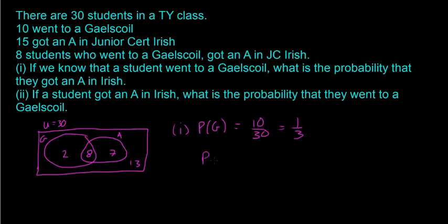And then also the probability that a student got an A. So 15 got an A, so that means half of them. So 15 over 30, and that equals half.